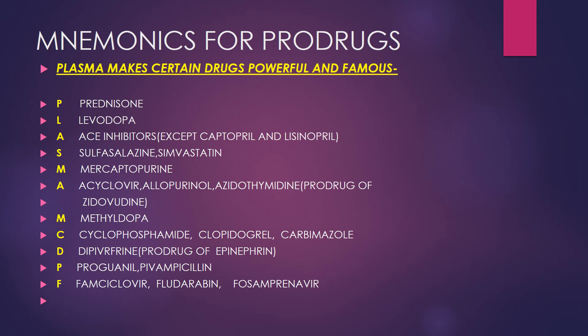Then M for methyldopa — levodopa and methyldopa sound similar. This group includes acyclovir and other antivirals. C for cyclophosphamide, clopidogrel (which is antiplatelet), and carbimazole (which is antithyroid). D for dipivefrin, which is a pro drug of epinephrine.